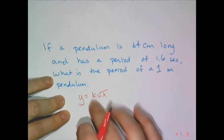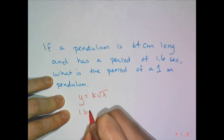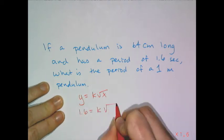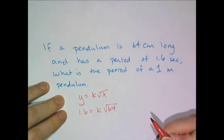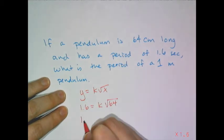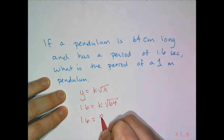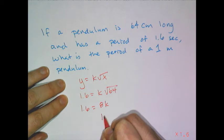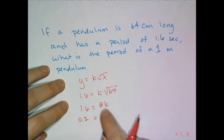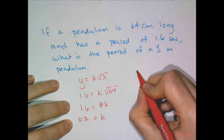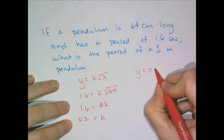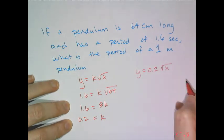I can substitute in the values I know, the 1.6 equals k times the square root of 64 to find that k value. So 1.6 equals 8k, and therefore k equals 0.2. And so now having that k value, I have a specific equation for this setup.